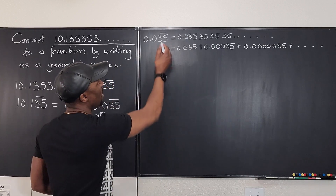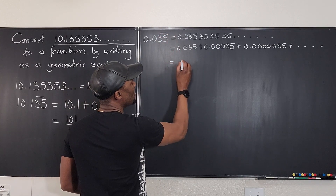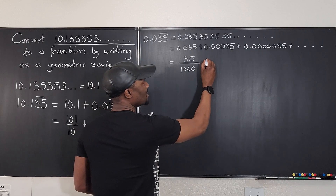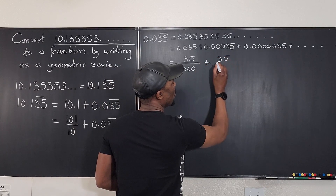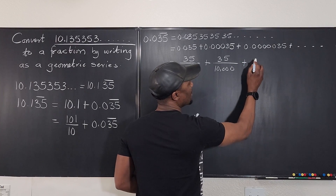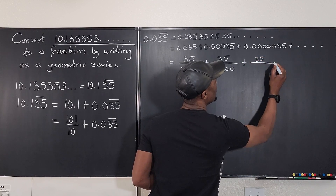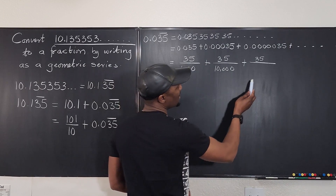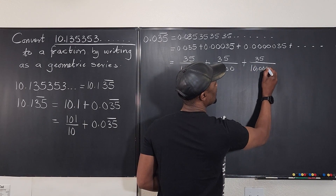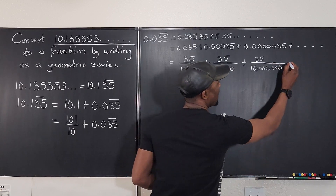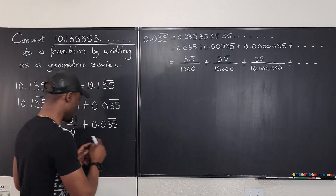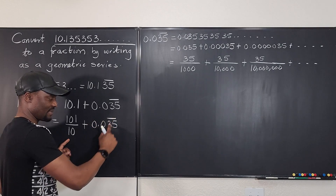Now this is easy to write as fractions because we don't have the bar on top anymore. The first term is 35 over 1000, plus 35 over 100,000, plus 35 over 10,000,000, and so on. Remember, whatever sum we get here, we're going to add it to the 101/10 term to get our final answer.